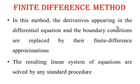In the finite difference method, the derivatives in the differential equation and the boundary conditions are replaced by their finite difference approximations. When we replace them, we get a number of equations equal to the number of unknowns. These equations are linear equations which can be solved by any standard method — direct methods like Gauss elimination, or iterative methods like Jacobi or Gauss-Seidel.